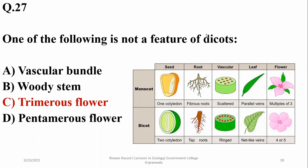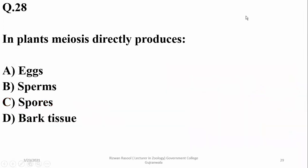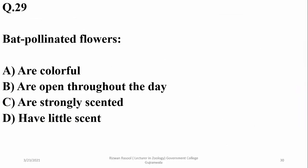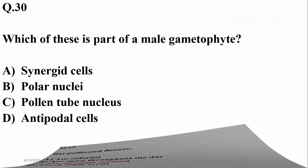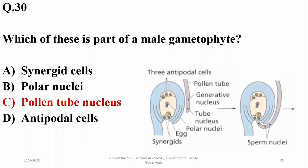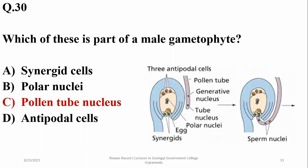The right option for number 27 is C. In plants, meiosis directly produces spores in their life cycle when the sporocyte undergoes meiosis. Bat-pollinated flowers are highly scented because bats cannot see bright colors; instead they smell the flowers during nectar feeding. All haploid cells are gametophyte, but synergid cells, polar nuclei, and antipodal cells are part of the female gametophyte, and pollen tube nucleus is part of the male gametophyte generation.